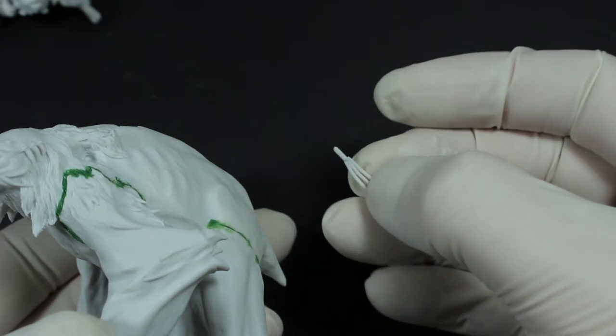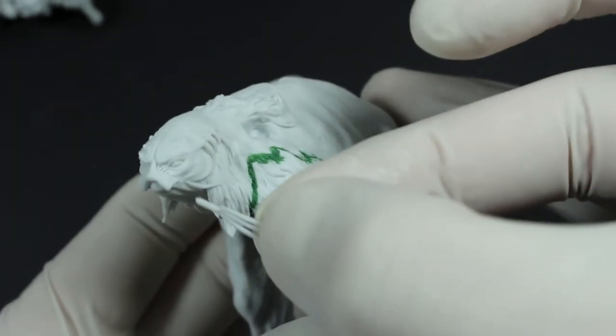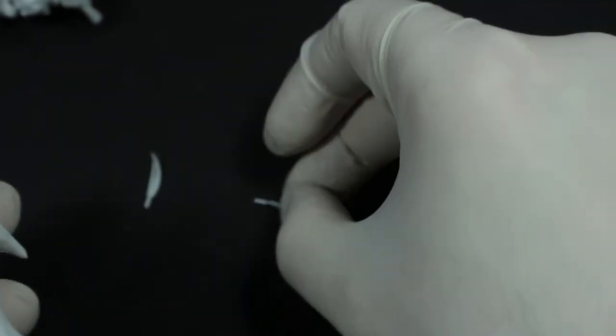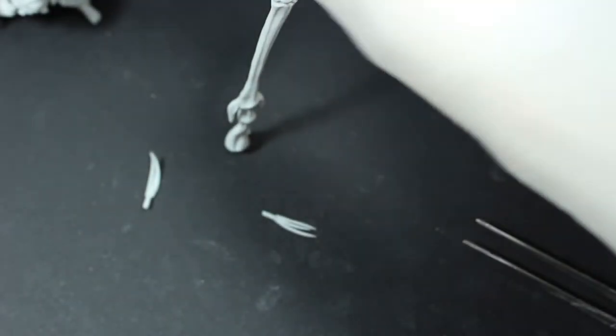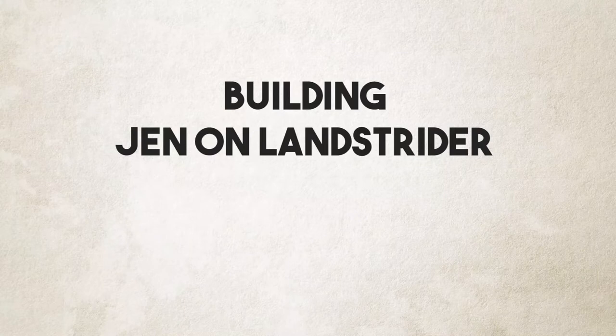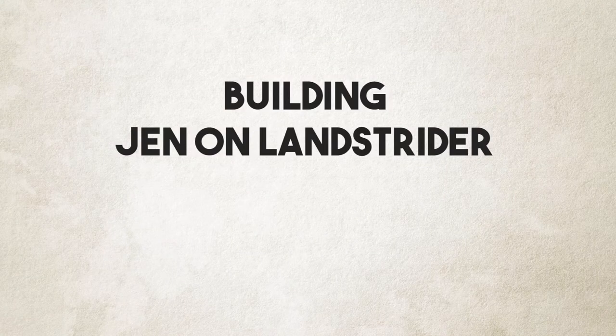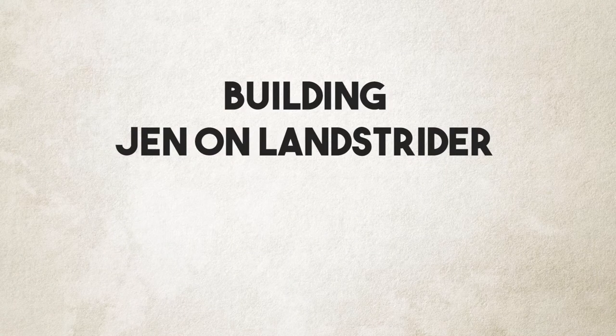These are the whiskers or tendrils, they're very delicate and they curve inwards on the model so they sort of get swept back, but we'll cover those in building Jen.